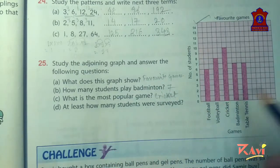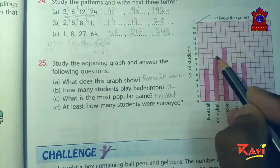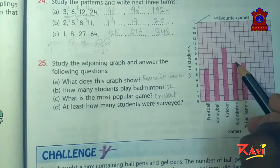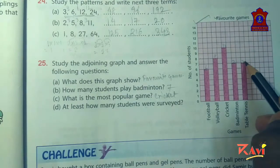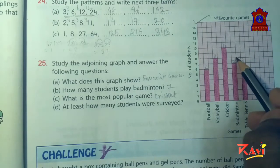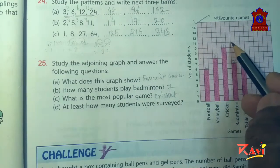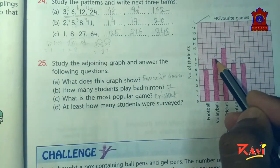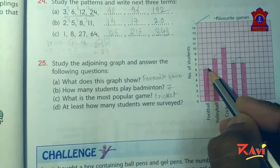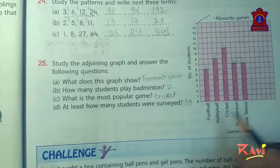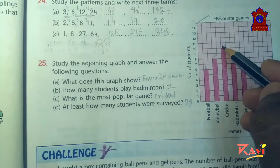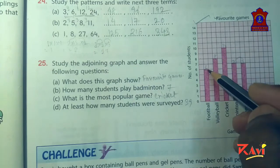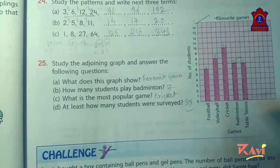At least how many students were surveyed? So you can add 8, 10, 7, and again 7. So add all: 7 plus 7 is 14, 14 plus 11 is 25, 25 plus 8 is 33, 33 plus 6 is 39. So total students are 39. Total number of students were 39 only.